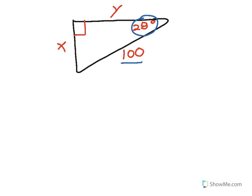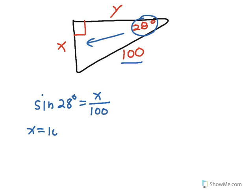With respect to the 28 degrees, if I focus on X — X is opposite the 28 degree angle, so that's going to be the sine function. I can say the sine of a 28 degree angle should be equal to the ratio of the opposite side X over 100. Using algebra to solve for X, multiplying both sides by 100, X is equal to 100 times the sine of 28 degrees.